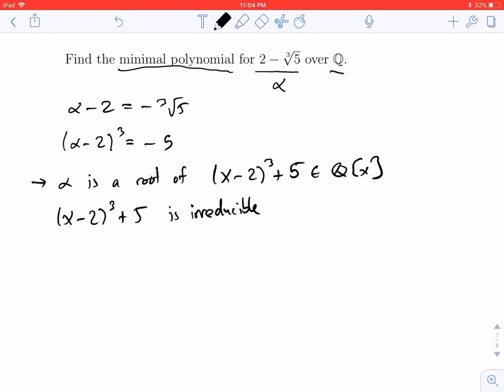If I'm right, if it is irreducible and monic, then it is the minimal polynomial. So this would tell you that it's the minimal polynomial for alpha over ℚ.